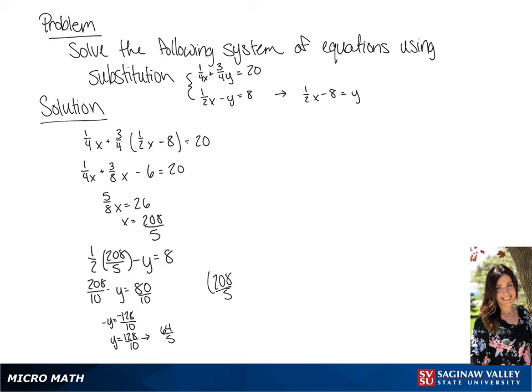This gives us a solution of 208 over 5, 64 over 5. Now we're going to graph our two equations.